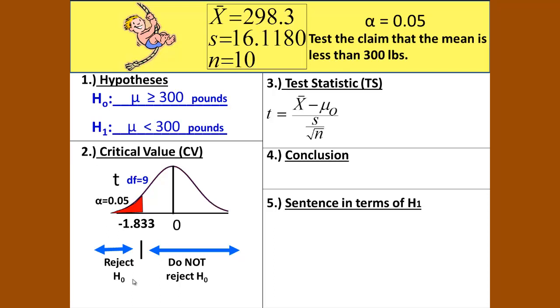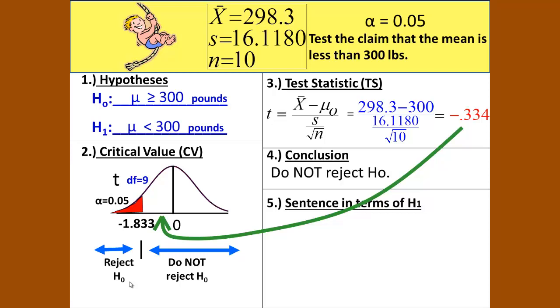We are now ready to compute the test statistic: t = (x̄ - μ₀) / (s / √n), which gives us (298.3 - 300) / (16.1180 / √10). When calculated, that gives us -0.334, and if we graph that onto our normal curve, we see that it falls in the do not reject region. So that means our conclusion is do not reject the null, do not reject H₀.